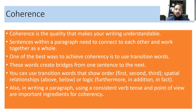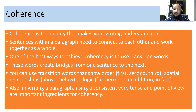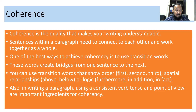Coherence is a quality that makes your writing understandable. Sentences within a paragraph need to connect to each other and work together as a whole. One of the best ways to achieve coherence is to use transition words. These words create bridges from one sentence to another. You can use transition words that show order — first, second, third — spatial relationship — above, below — or logic — furthermore, in addition. Also, in writing a paragraph, using a consistent word tense and point of view are important ingredients for coherence.